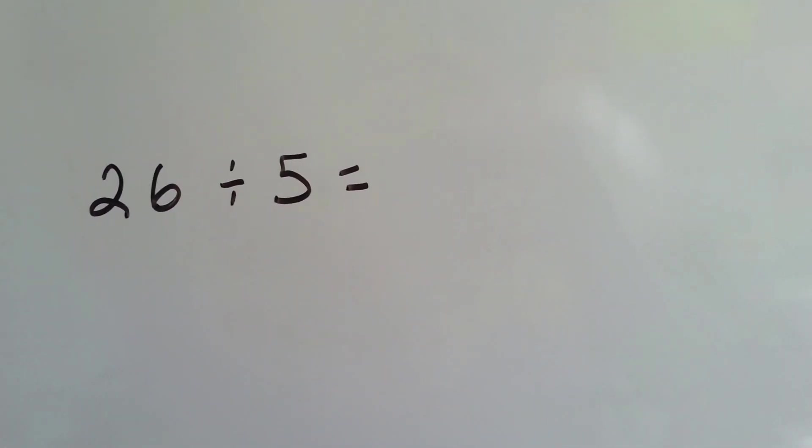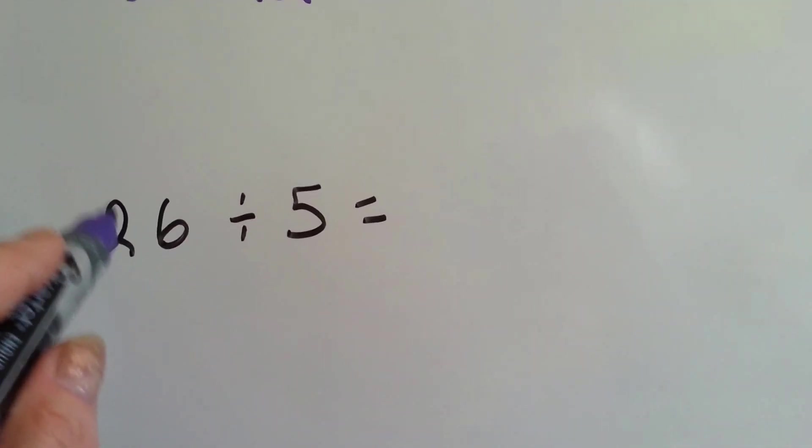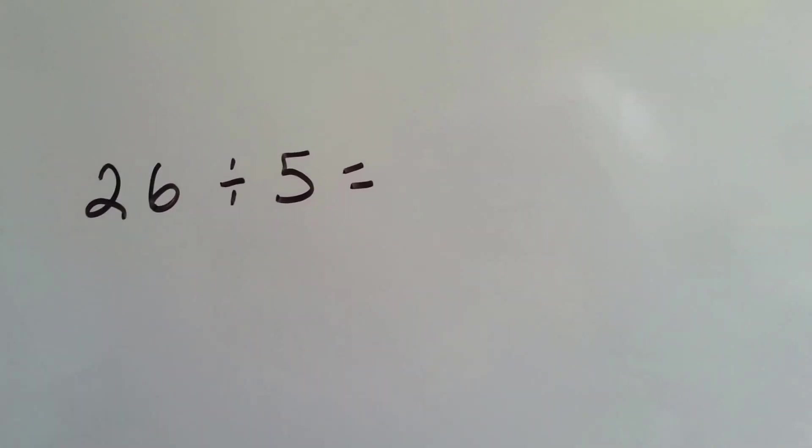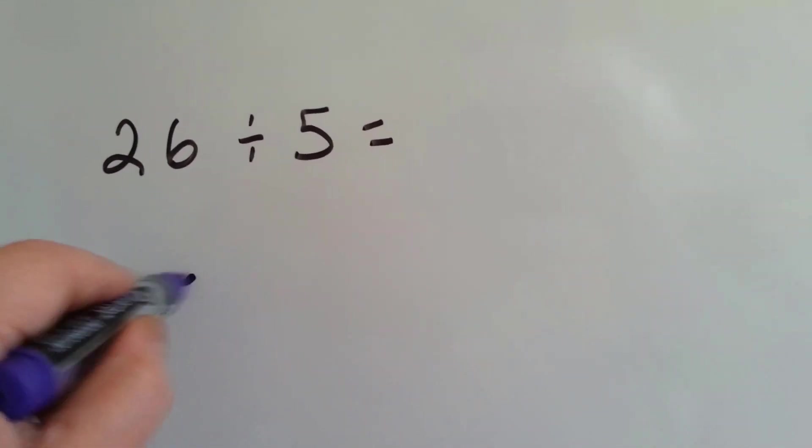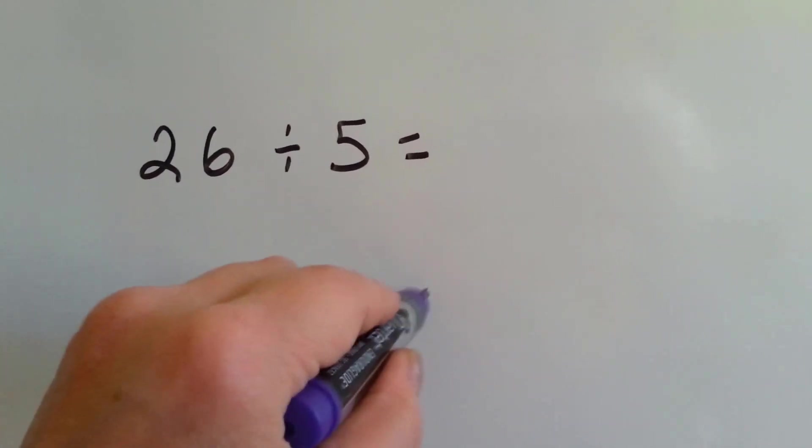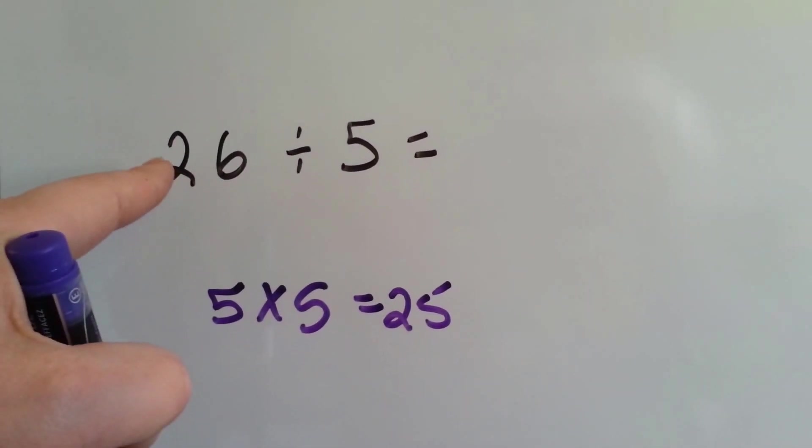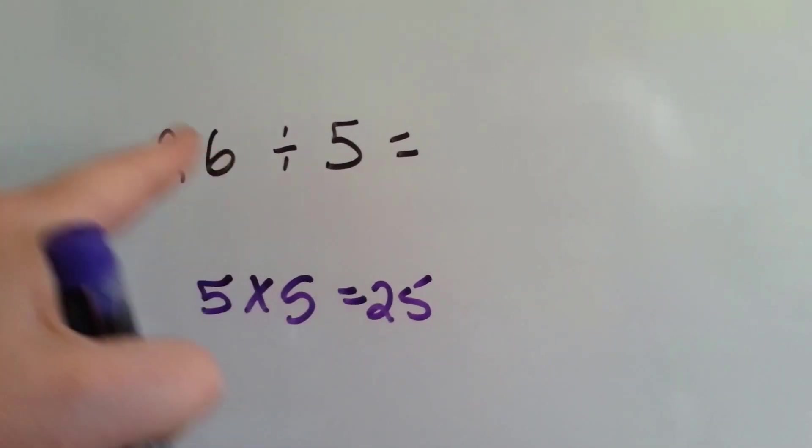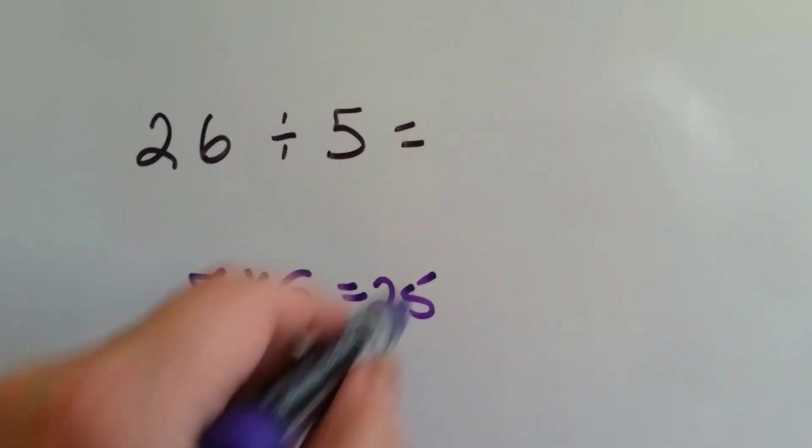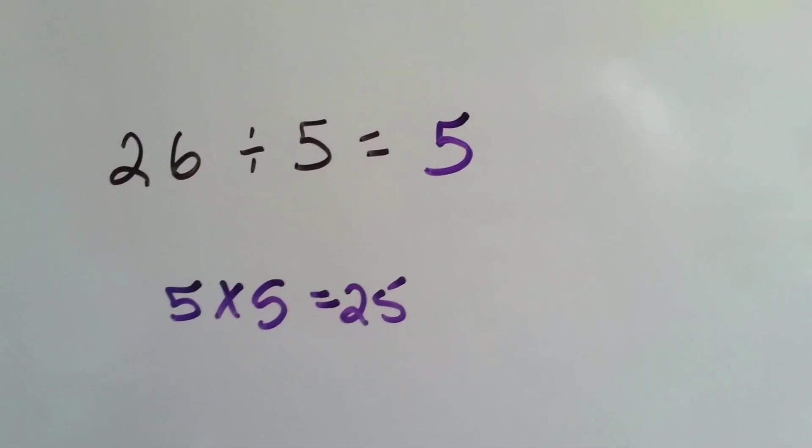26 divided by 5. How close can we get to 26 with multiples of 5? Do you remember that 5 times 5 is 25? That's pretty close, isn't it? It's just 1 away.